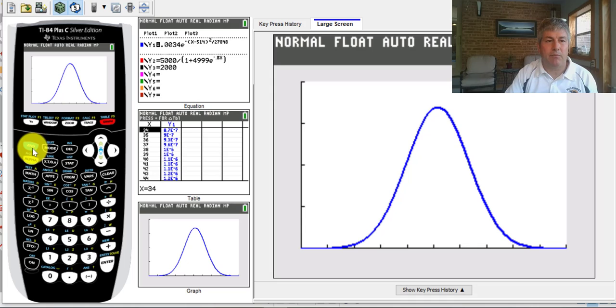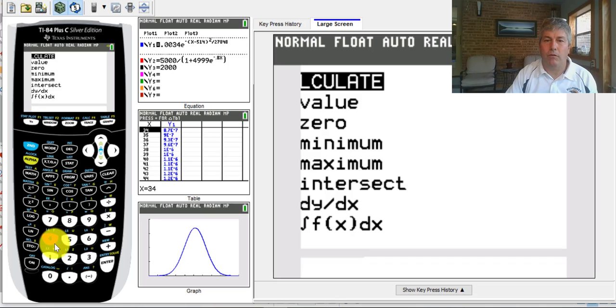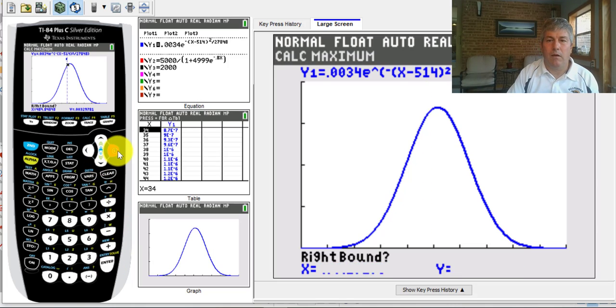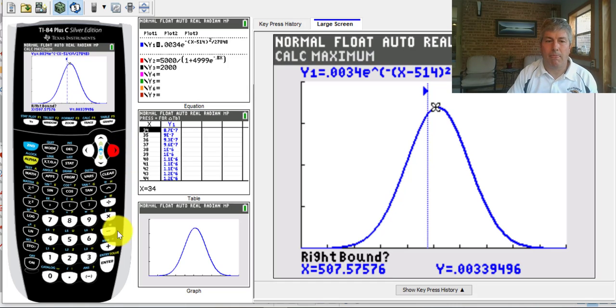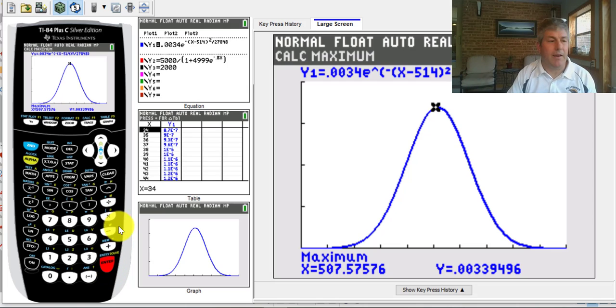So then we just want to find the maximum. We go to our calc function, and 4 is the maximum, and we are looking for our left and right bounds here. So our left bound, we want to make sure we're to the left of the maximum, and we'll trace over to the right bound. Hit enter and make a guess, and we will graph. So we find out that our maximum is indeed about 507.